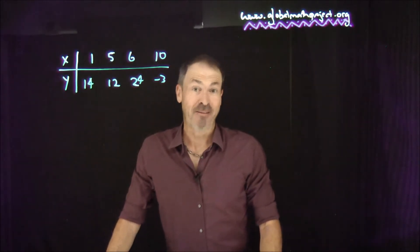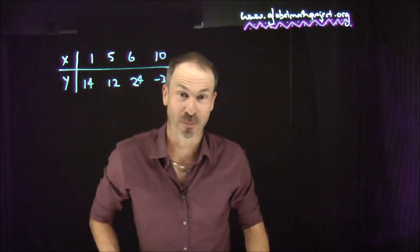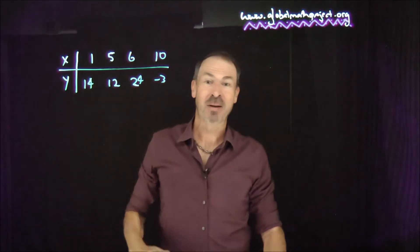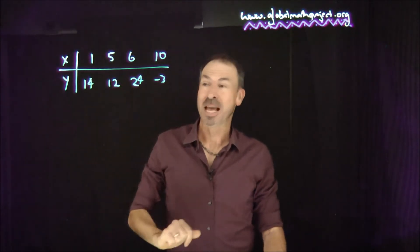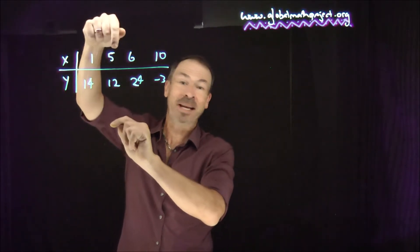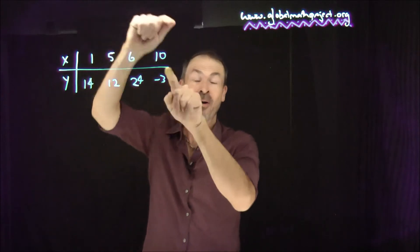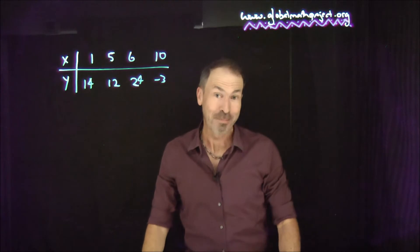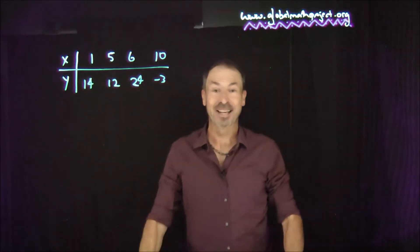Let's now be very general and find a formula that fits four data points. x is 1, 5, 6, or 10. When x is 1, I want an output of 14. When x is 5, I want an output of 12. When x is 6, an output of 24. And when x is 10, I'd like an output of negative 3. Can you write down a formula that fits that data?